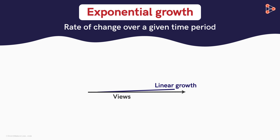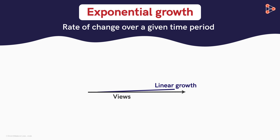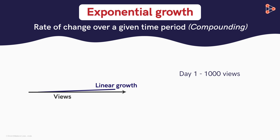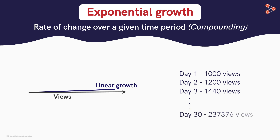It is the rate of change over a given time period — something we refer to in the real world as compounding. So if we get 1000 views on day 1 and each subsequent day we get 20% more views, day 2 we will have 1200 views, day 3 will be 1414 views. And look at the staggering number on day 30: 237,376 views.